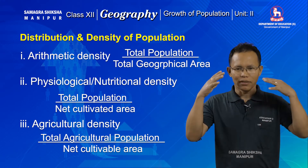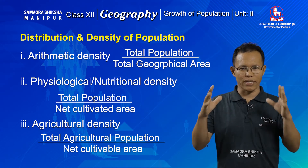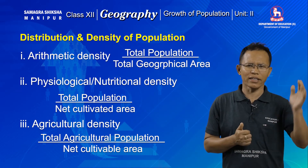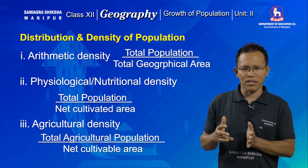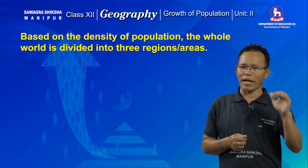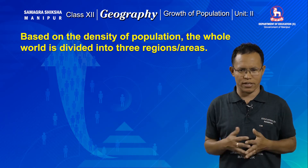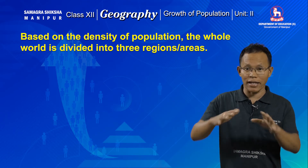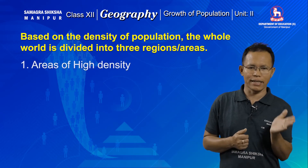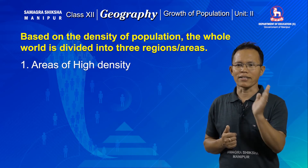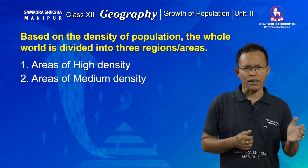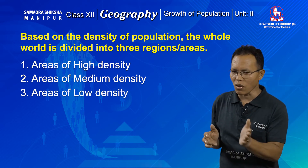We have discussed three types of population density. Like population distribution, which is uneven all over the world, population density is also highly uneven. Based on the values of population density recorded, we can categorize the entire world into three different regions: the first is areas of high density, the second is areas of medium density, and the third is areas of low density.